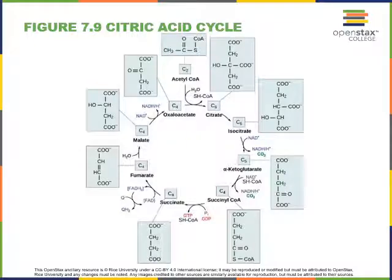Acetyl-CoA produced by the pyruvate dehydrogenase complex next enters the citric acid cycle inside the mitochondria, in the central compartment known as the mitochondrial matrix. Acetyl-CoA is converted into a six-carbon chemical known as citrate. The citric acid cycle gets its name from citrate, which is the conjugate base form of citric acid. In the next step, citrate is converted into isocitrate through an isomerization reaction.